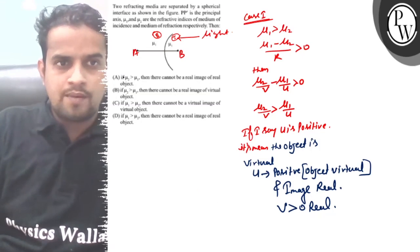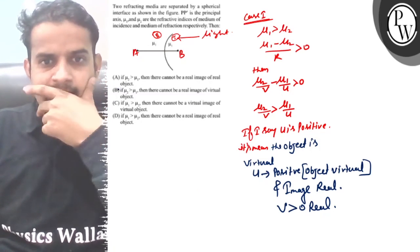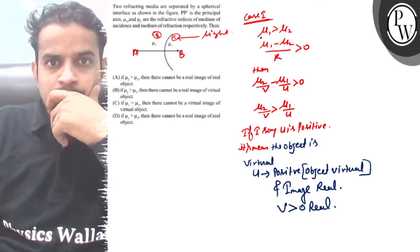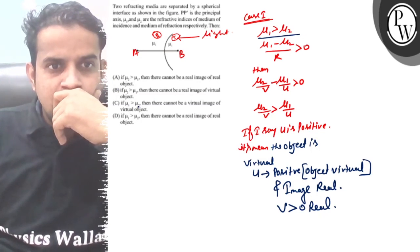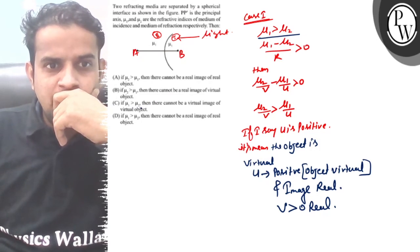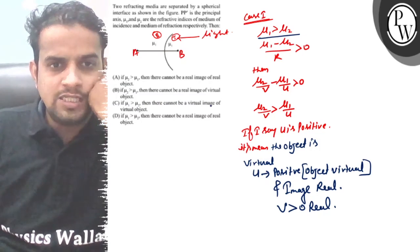The correct answer is that μ₁ is greater than 2μ₂. When μ₁ is greater than 2μ₂, then there cannot be a virtual image or virtual object.